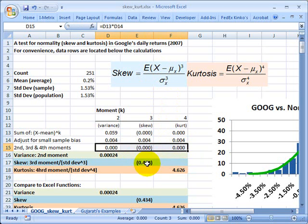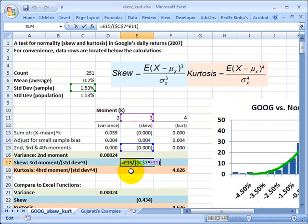And now if I come down here to skew, we can see I've got a formula in here. I take that third moment, which again is this numerator, and divide it by the standard deviation right here raised to the third power. So that's this right here.